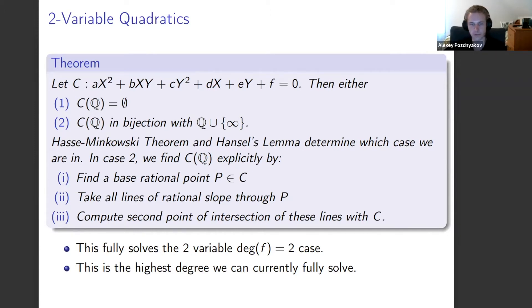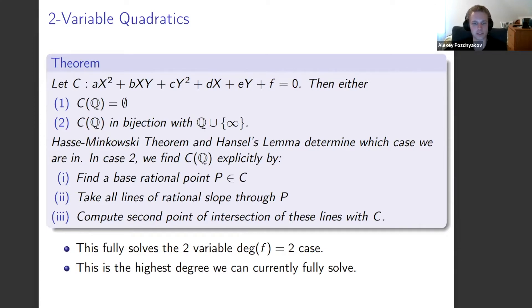For degree-two, two-variable polynomials with integer or rational coefficients, there are either no rational solutions or infinitely many, determined by the Hasse-Minkowski theorem. When solutions exist, we can find them all: pick one rational point P, take all lines of rational slope through P, and compute the second point of intersection with the conic. Since the line through two rational points has rational slope, and substituting a rational line into the conic gives a degree-two polynomial with rational coefficients and one known rational root, the second root must also be rational.